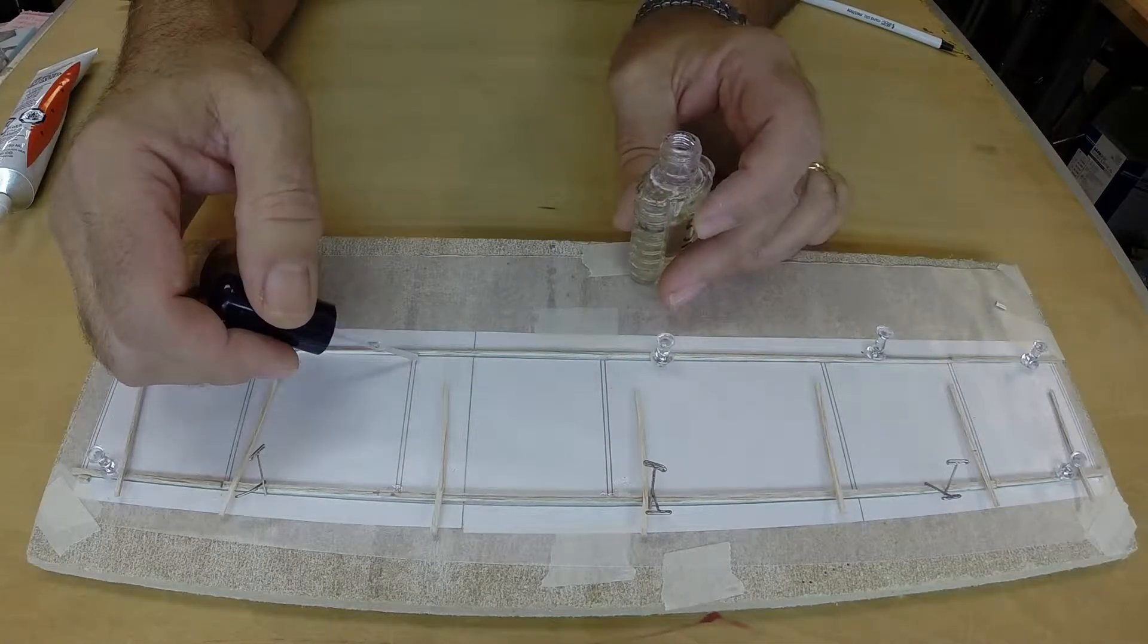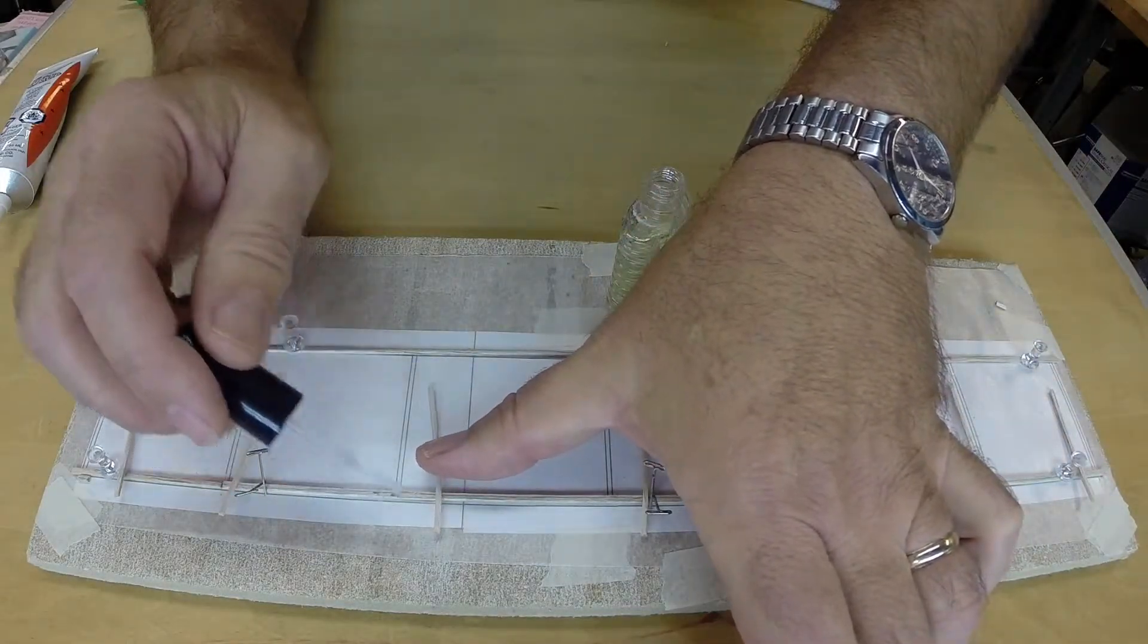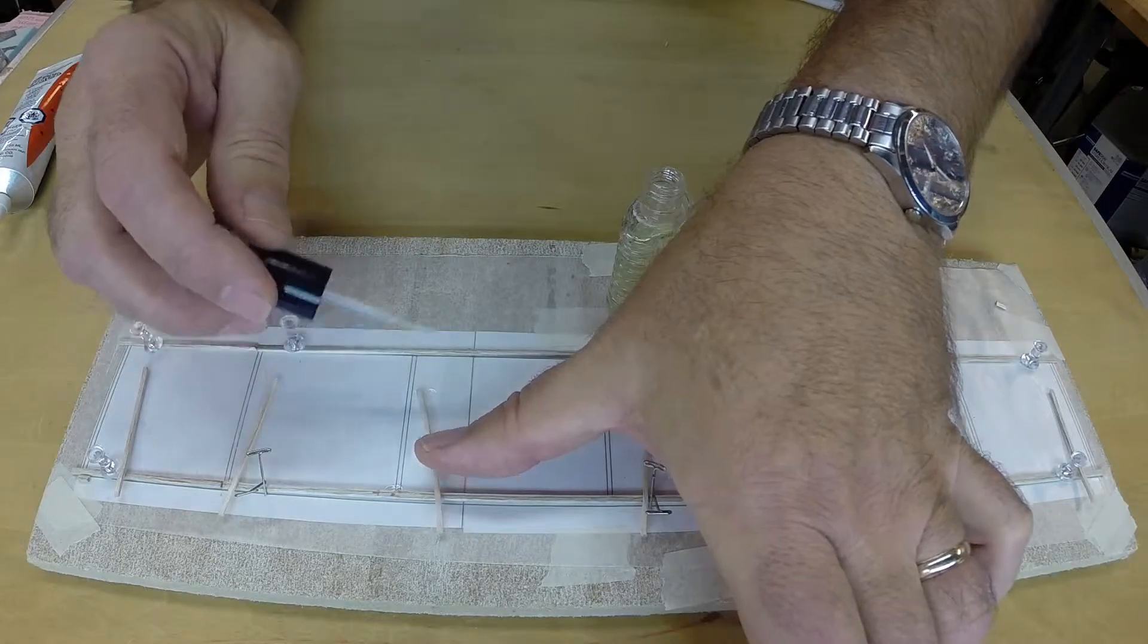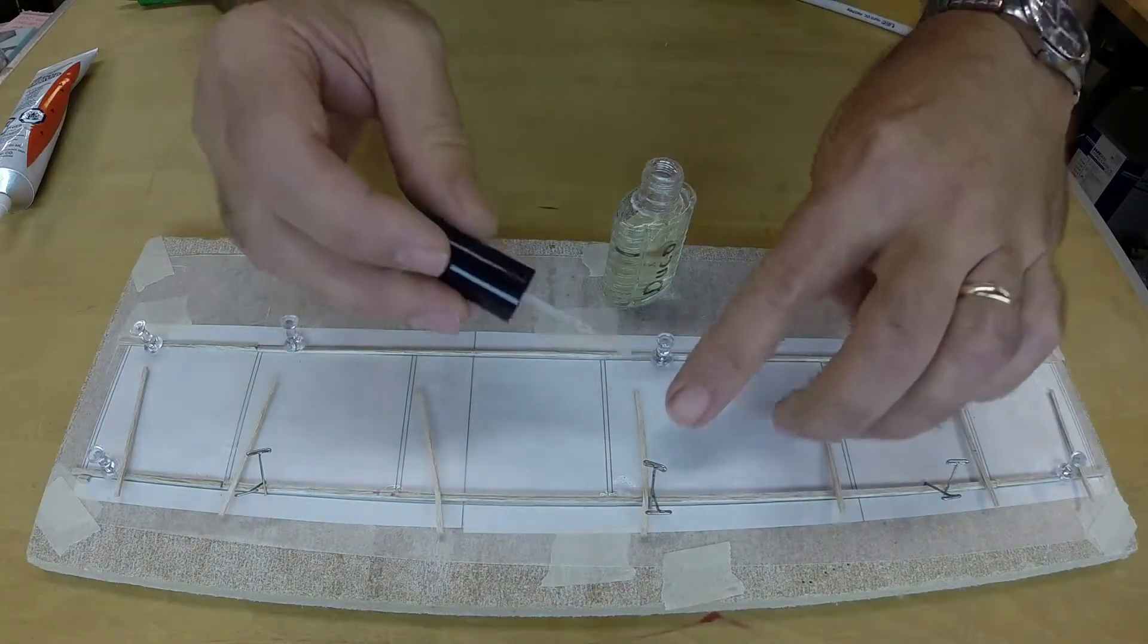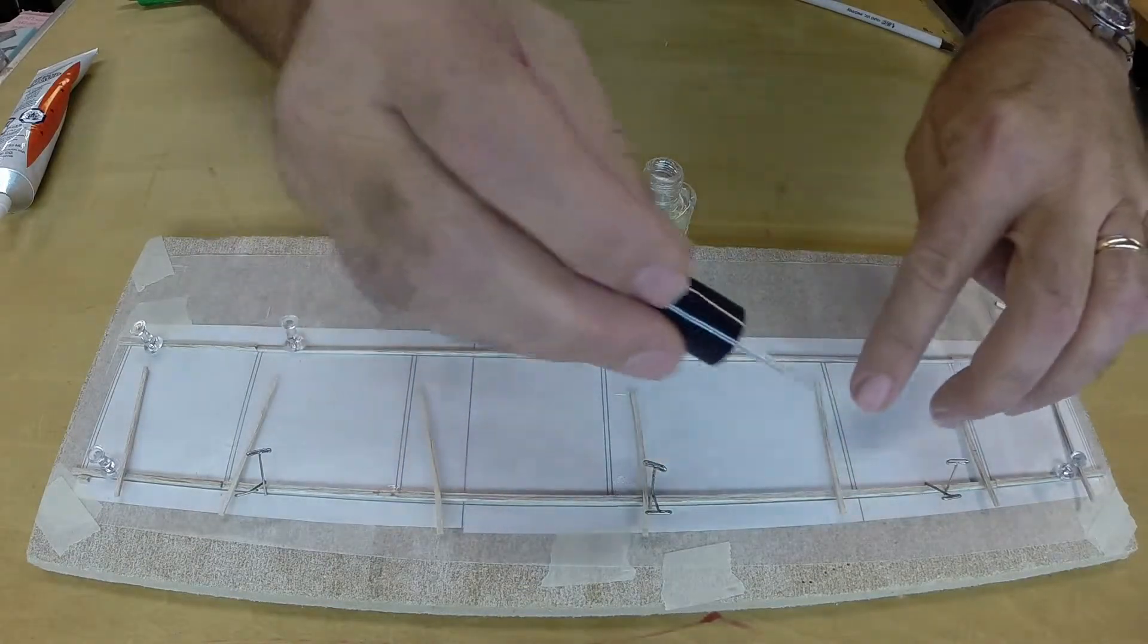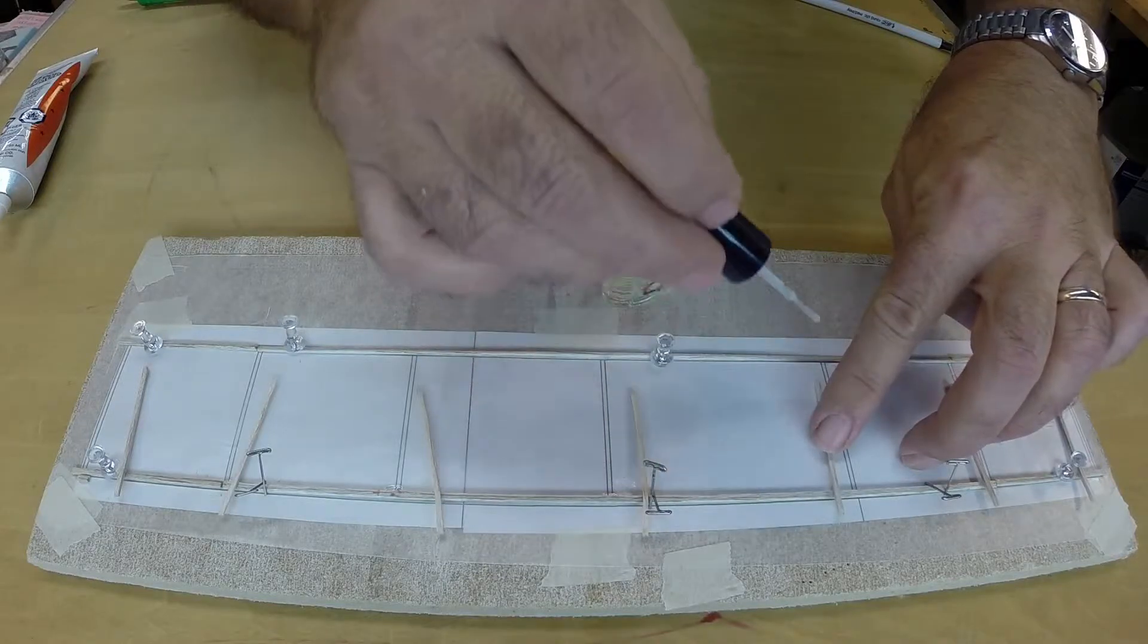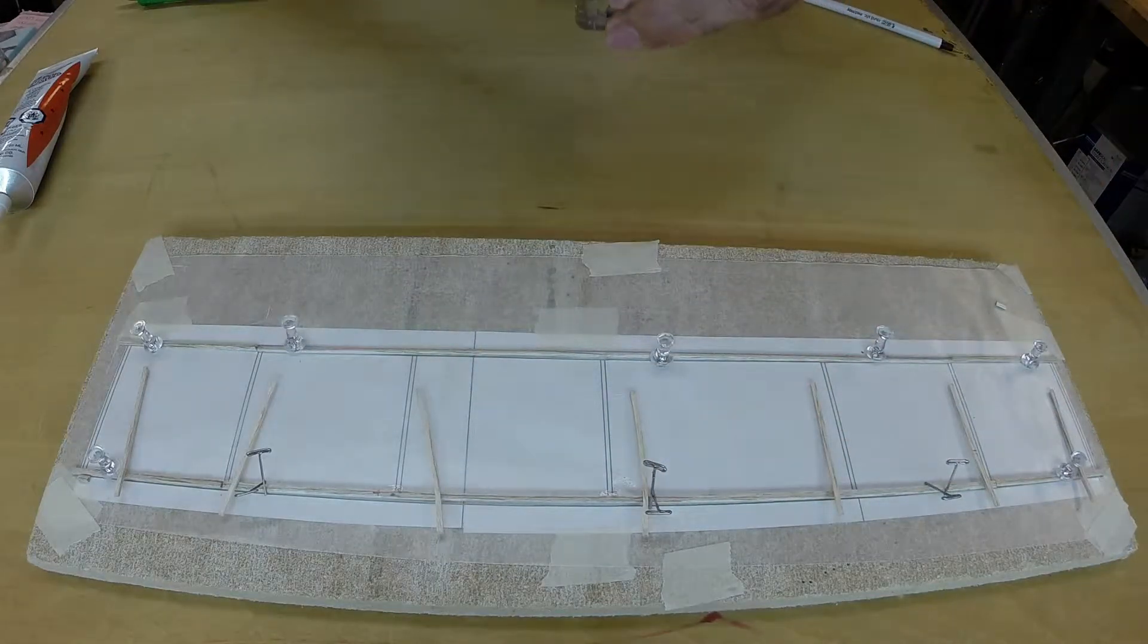While this might seem time intensive, you will quickly learn to apply the glue to parts as you work cutting, sanding, and fitting other parts so that the prepared parts are ready for a second application without wasted time or waiting. The parts can be handled with care in about 5 minutes. Allow 15 minutes for the joint to dry.